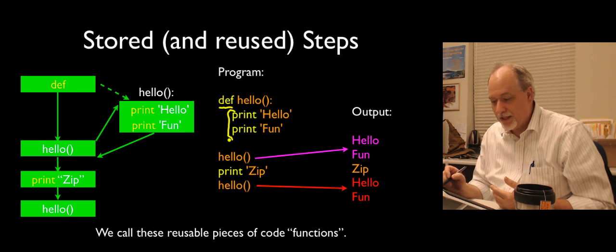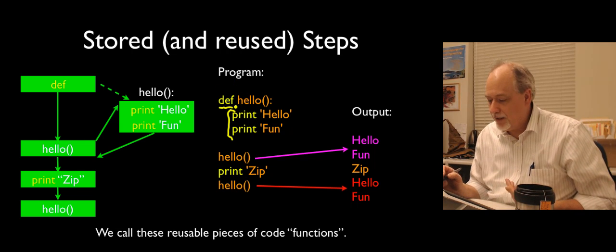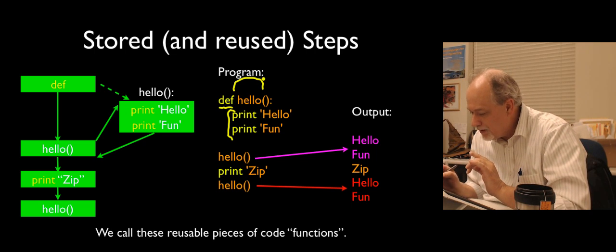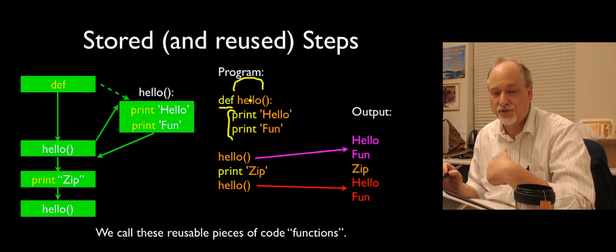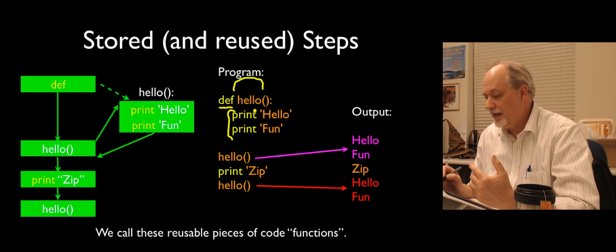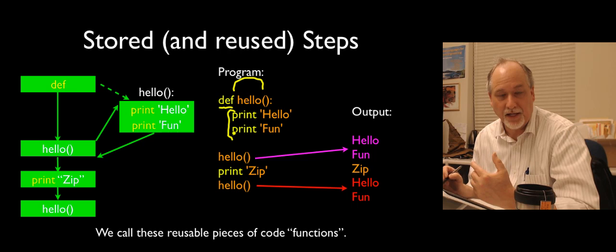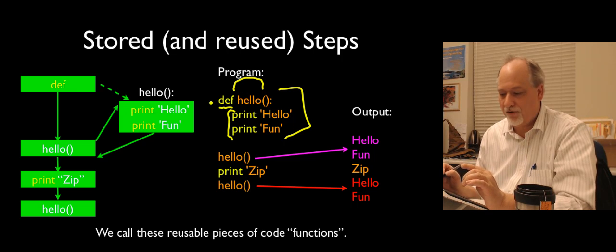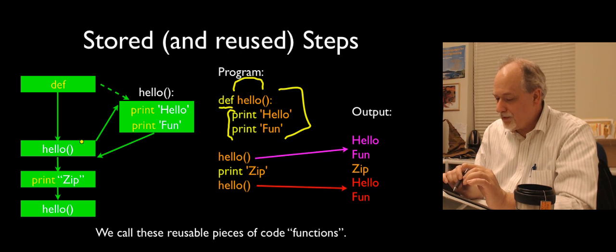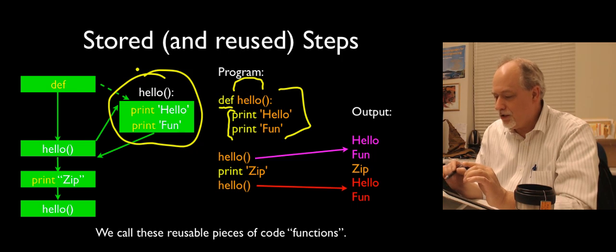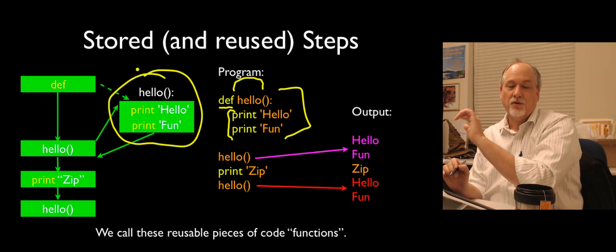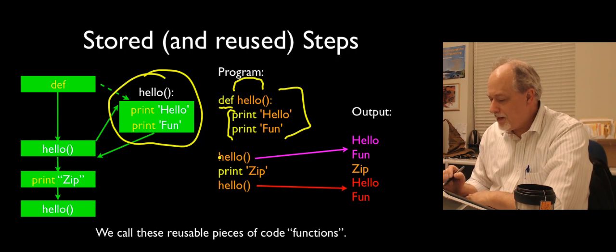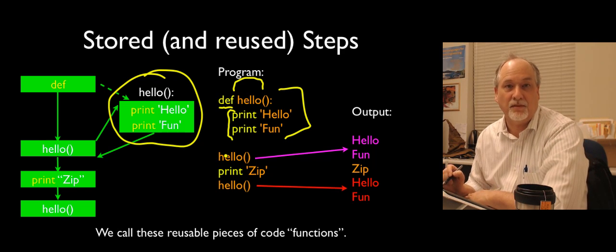So instead of running the code like if we just put print hello and print fun — it would run it — but instead it says, don't run it right now. Name it hello. It's kind of like a variable; we choose the name. We've chosen hello as the name of this. Define it as hello, have it contain these two lines of Python, and we'll use it later. That's the function definition — that's the store phase. It's sort of like it makes a variable called hello that actually contains Python code, rather than containing a number or a string.